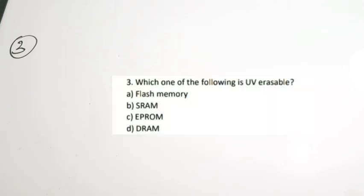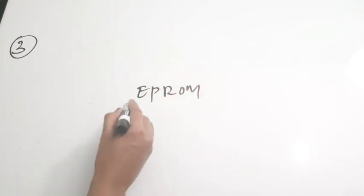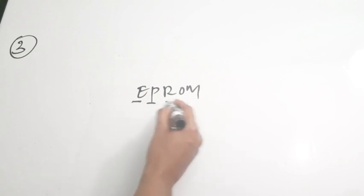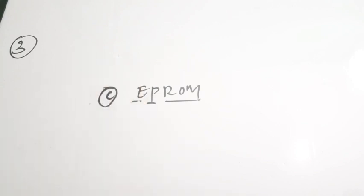Third question: which one of the following is UV erasable? Options: A — flash memory, B — SRAM, C — EPROM, D — DRAM. The correct answer is EPROM. EPROM stands for Erasable Programmable ROM — 'E' stands for erasable, 'P' stands for programmable. The erasing is done with the help of UV light. So the correct answer is option C.